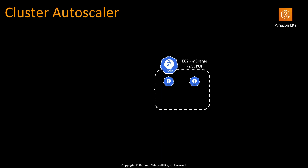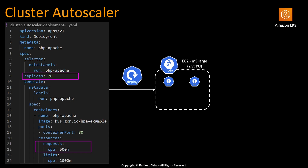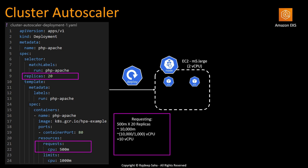Let's say you have an EKS cluster with one EC2 worker node running. That EC2 is of type m5.large, which has two vCPUs, and you have two pods running in it. Then you deploy this deployment file, and in this deployment file each pod is requesting 500 millicore of CPU.